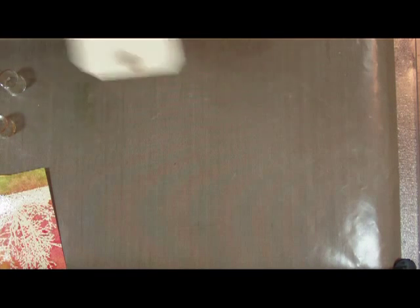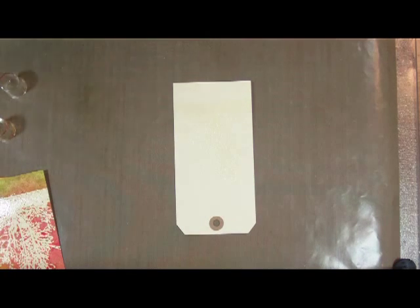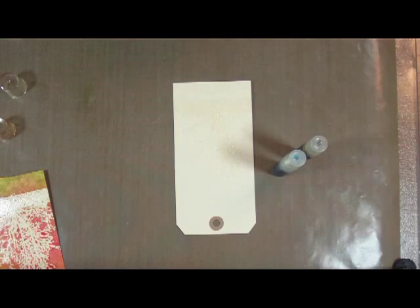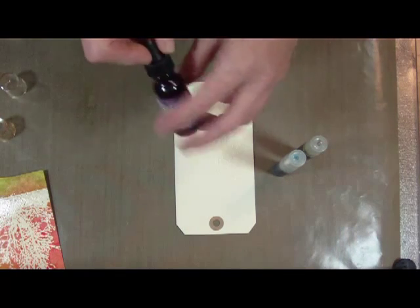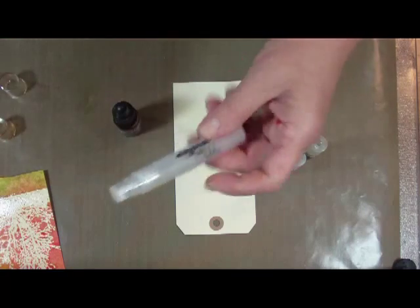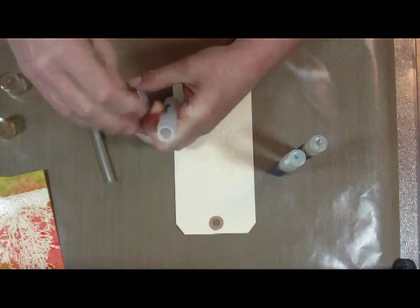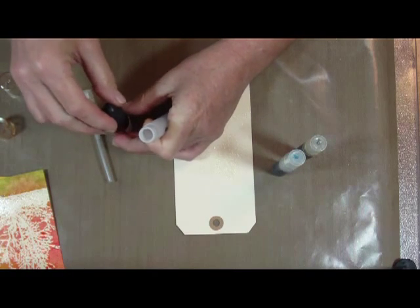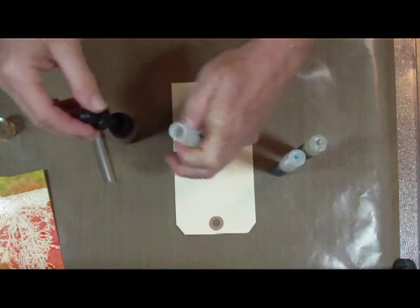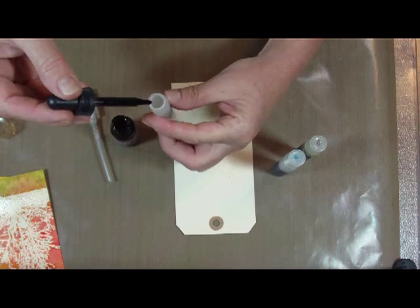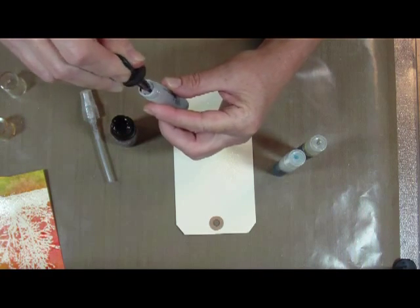Now, if you don't have the Ranger color wash, I wanted to show you what you could do there. I've already embossed another tag with the same image, and I have a green and a blue distress re-inker mixed up in a Ranger mini mister. You can do this with any water-based re-inker. All you Stampin' Up users, you can use your inks.